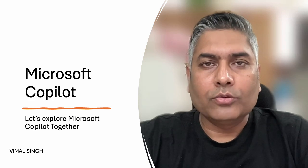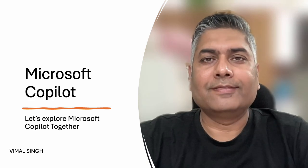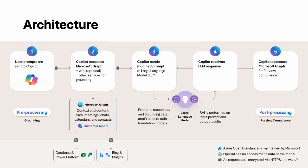So this is the architecture of Copilot. This diagram, as you can see, has been divided into two parts: the first part is pre-processing and the second part is post-processing. Let's explore step by step.